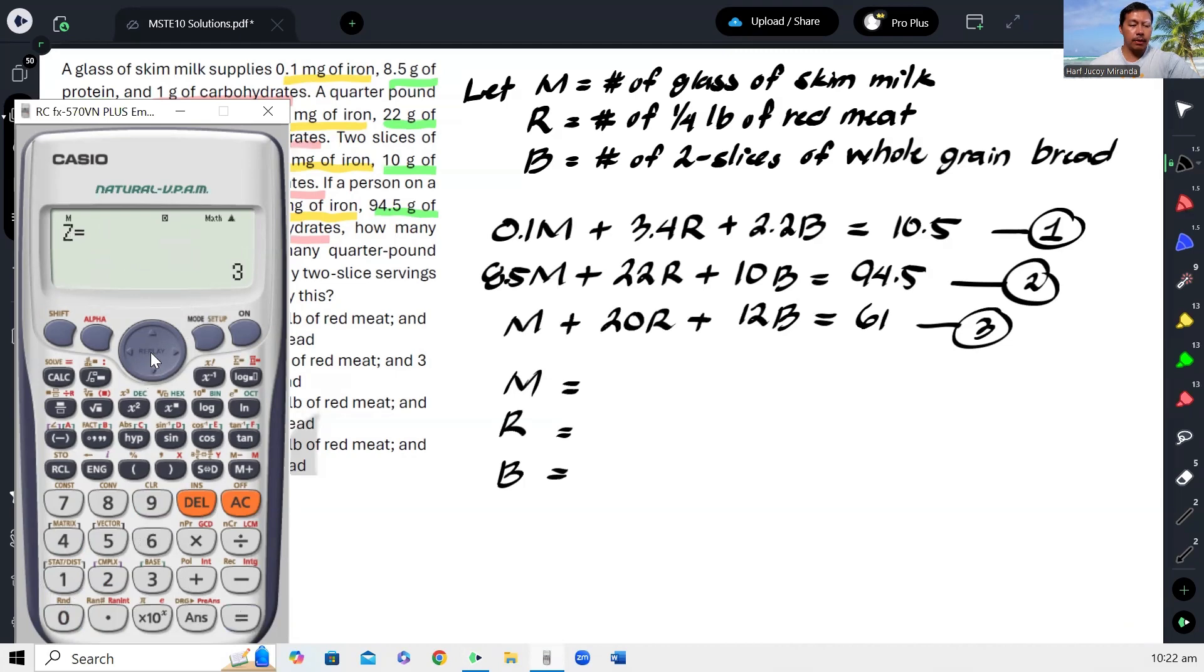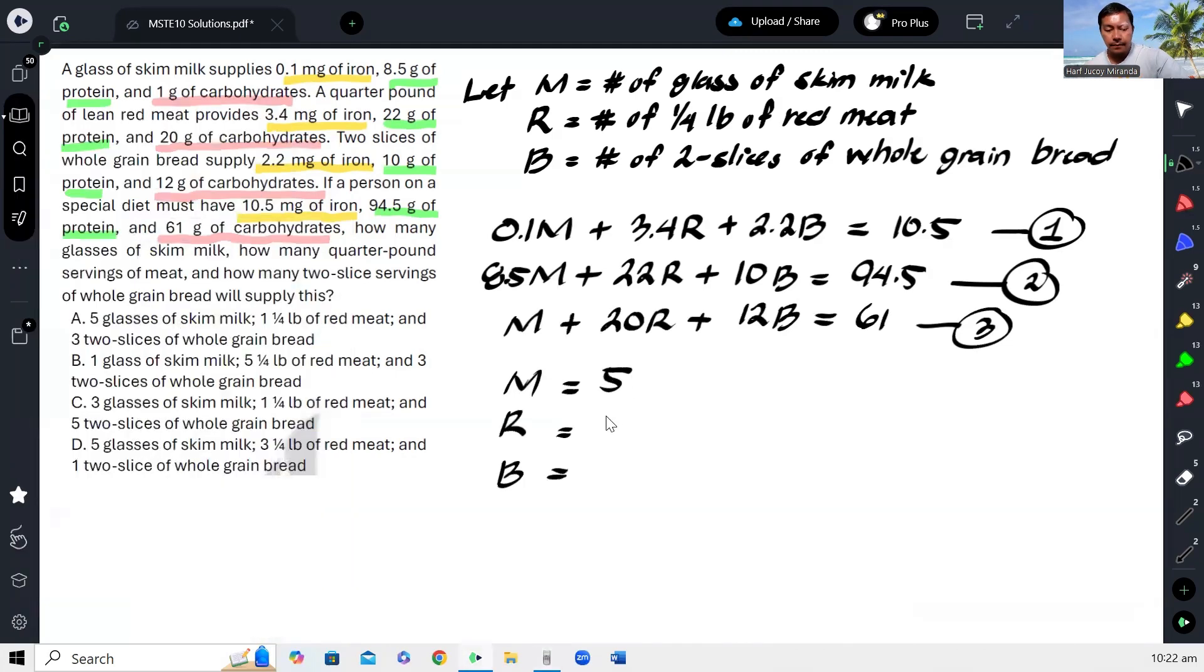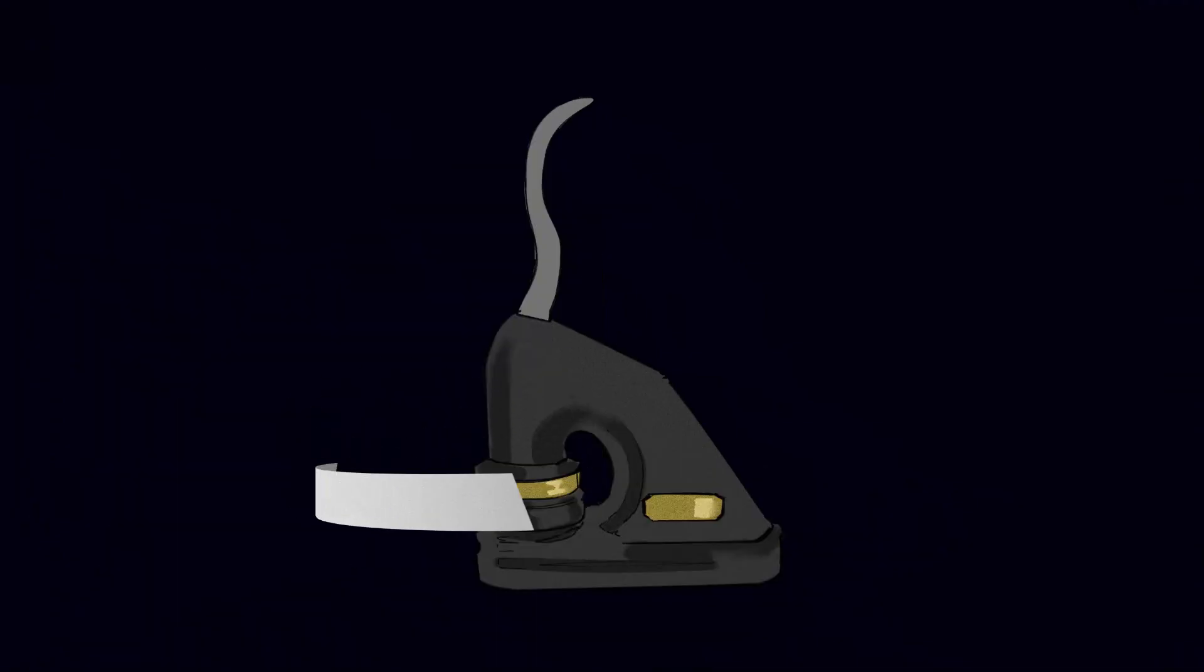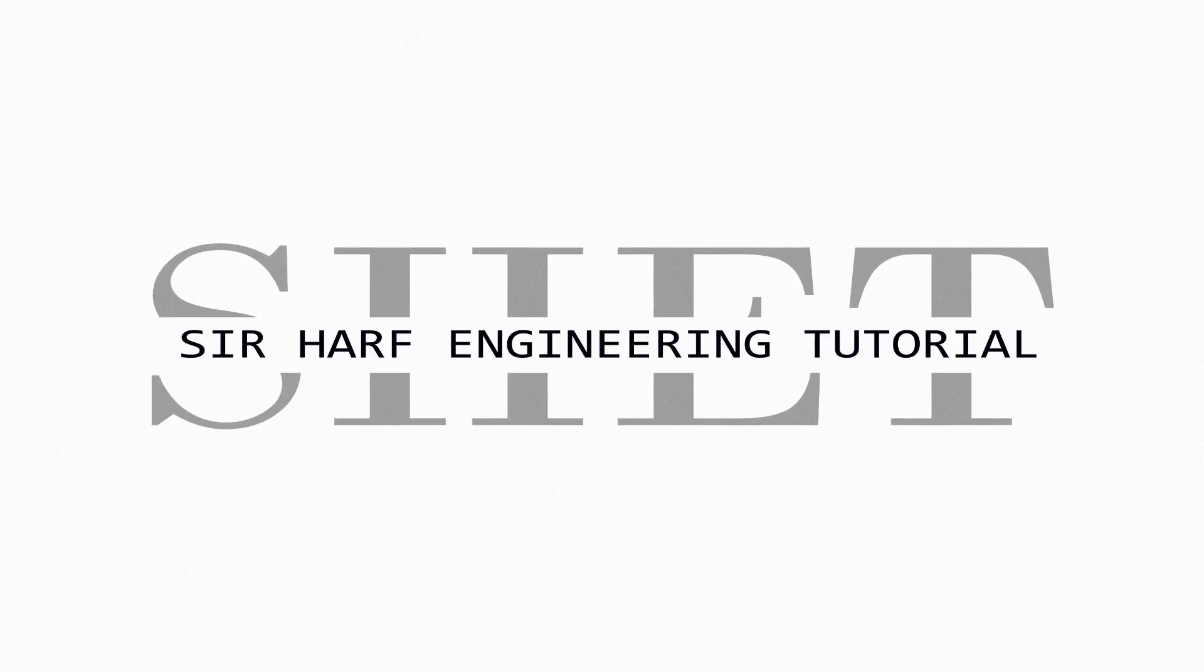So we have 5, 1, and 3. So ibig sabihin, meron tayong limang, kailangan natin ng limang glasses of milk, one quarter pound of red meat, and tatlong serving ng two-sliced bread. So our answer here would be five glasses, one quarter pound, and three servings of bread. And that's how we solve this problem.